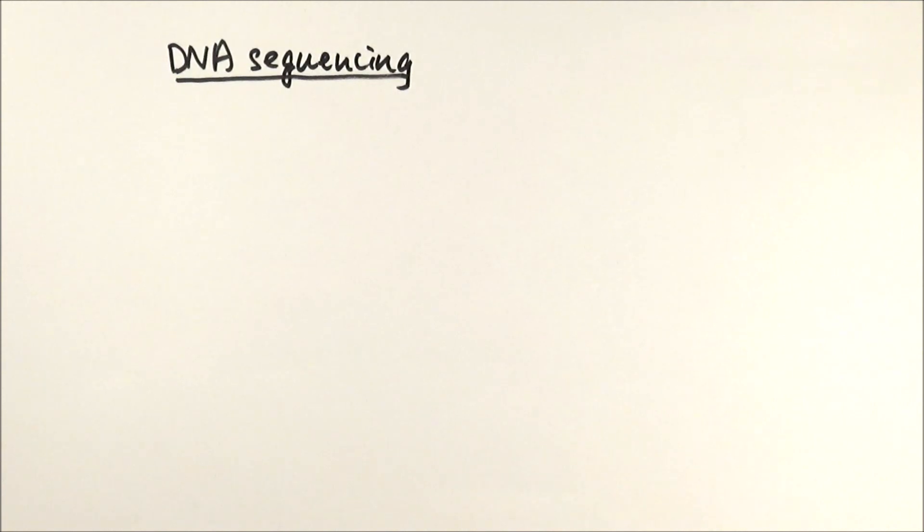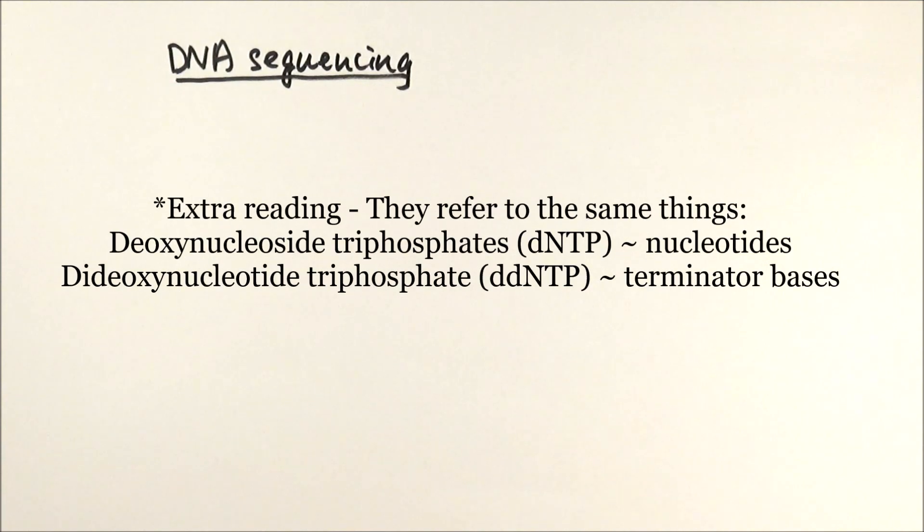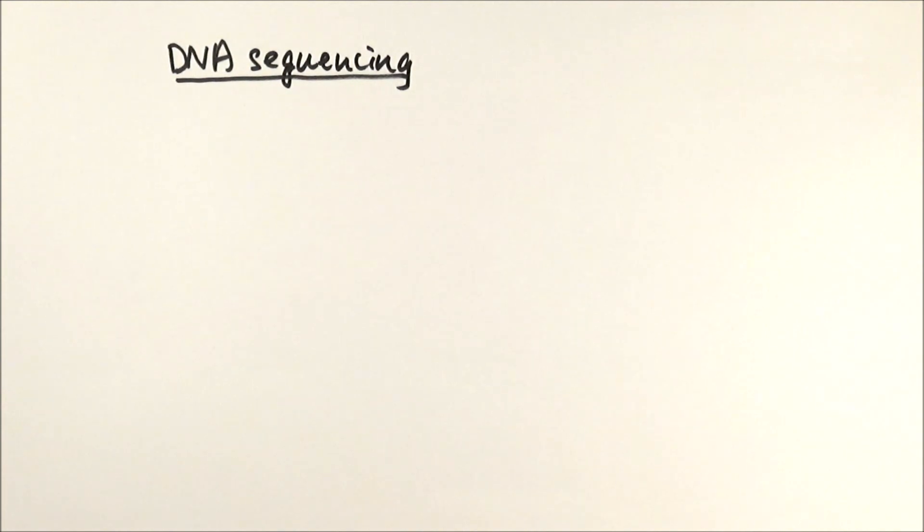For some of you doing extra reading, you'll notice that many articles or websites say they use deoxynucleoside triphosphates or DNTP instead of nucleotides, and dideoxynucleotide triphosphate, DDNTP, instead of terminated bases. They work exactly the same. Just think of them as simple nucleotides and they'll be fine.